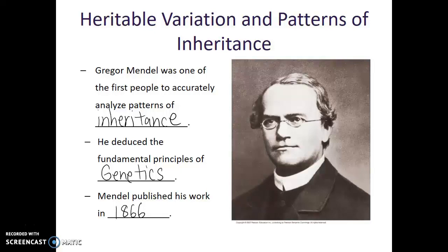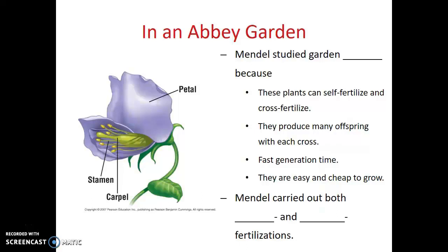Gregor Mendel performed most of his research on a specific type of organism — garden peas — and he used these organisms for several different reasons. He could easily control the crossing, and this would allow for both self-fertilization and cross-fertilization. They made many offspring each time reproduction happened, they had very fast generation time, so he could get several generations grown in a single growing season, and they were cheap and easy to grow.